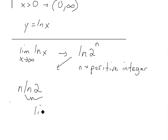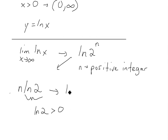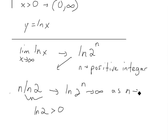Using logarithmic properties, we can bring the n down: n times ln of 2. Now ln of 2 is greater than zero — you can see this from the definition of logarithmics using integrals and derivatives, as it represents area under a curve. Since ln 2 is positive and n is positive, as n approaches infinity, n times ln 2 goes to infinity.